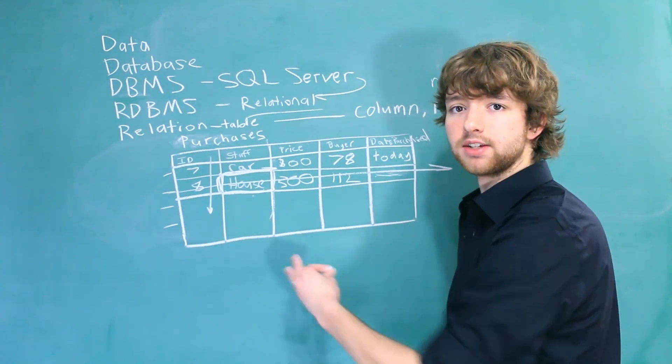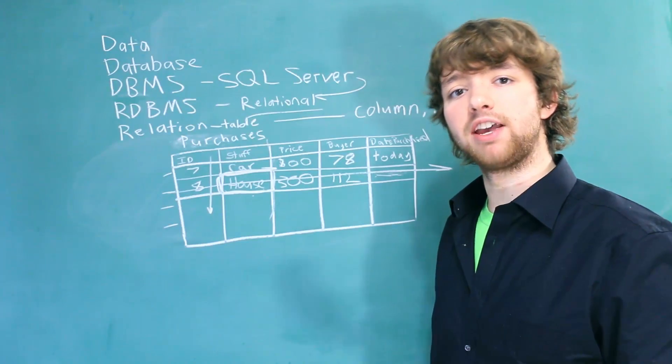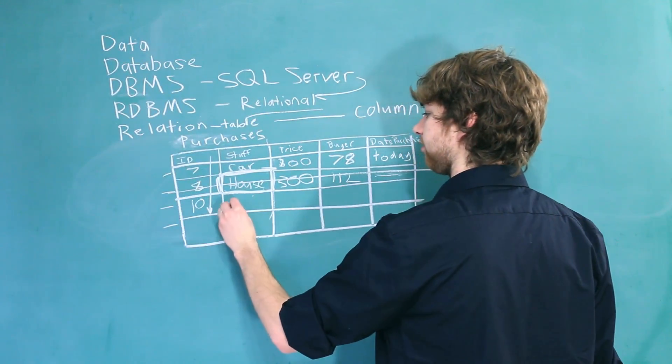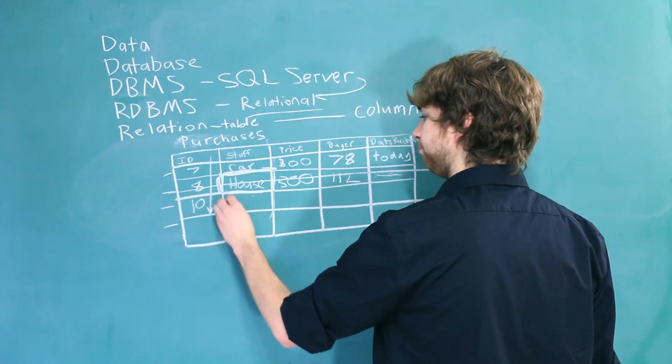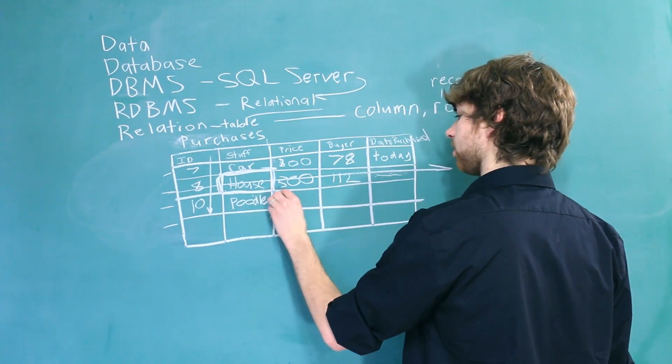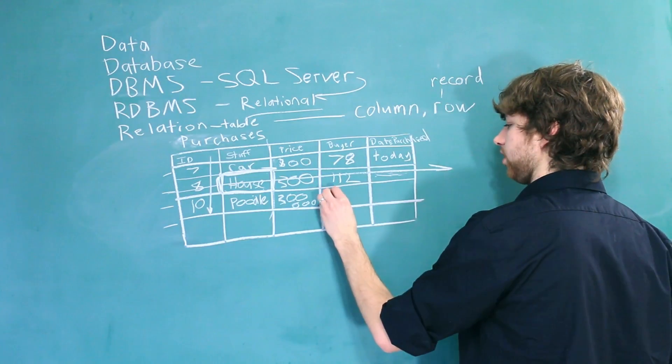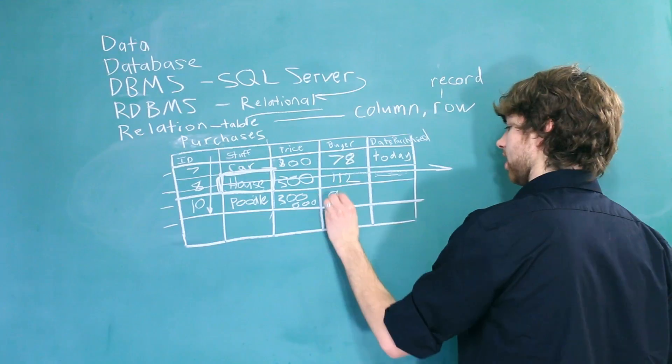There's a lot of different terms that you need to become familiar with. Now, when you are inputting data into this table, sometimes you will leave a field blank. For example, we can have the ID of 10. Stuff, we could have them buy a poodle. And the poodle costs $300,000. Who bought it? The dude with the ID of 96.